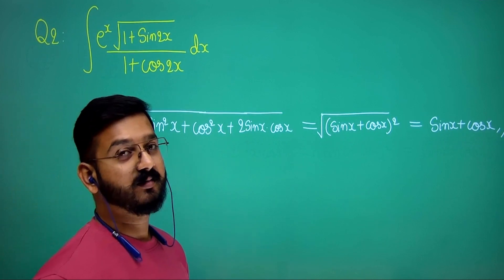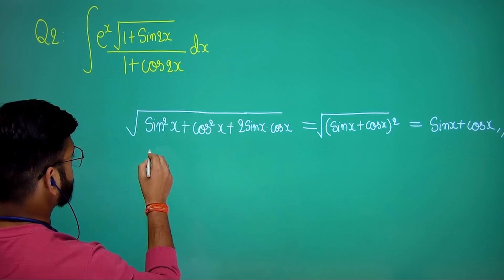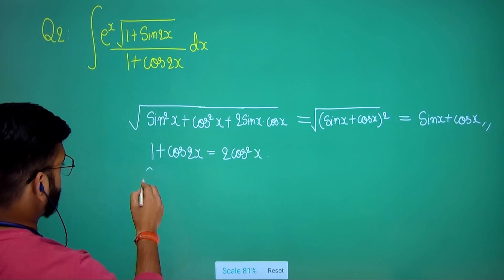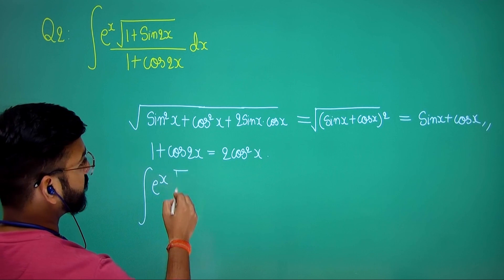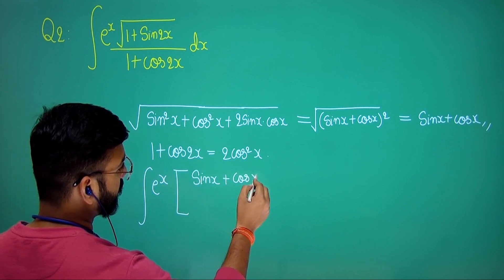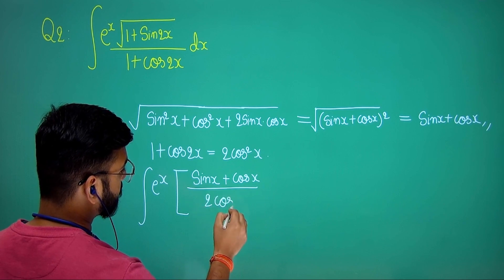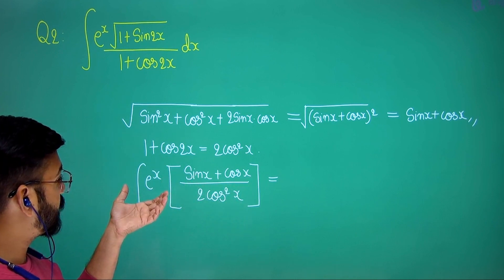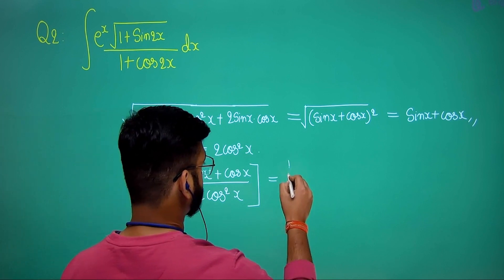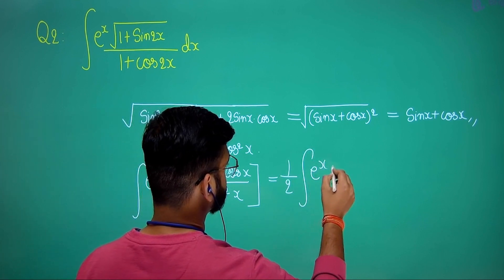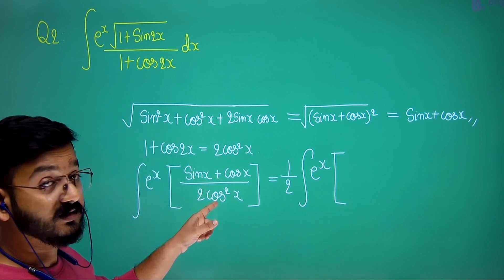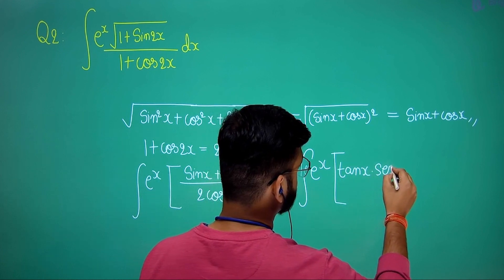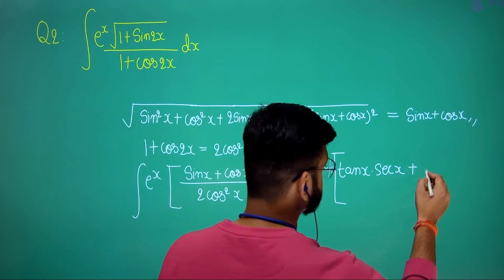For the denominator, 1 plus cos 2x equals 2 cos²x by the standard trigonometric identity. Substituting, the expression becomes (sin x + cos x) divided by 2 cos²x, multiplied by e to the power x. Splitting the fraction: sin x over cos²x is tan x times sec x, and cos x over cos²x is sec x. So the integrand is e to the power x times (sec x·tan x + sec x).